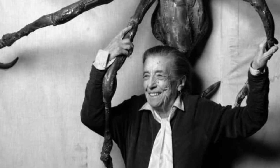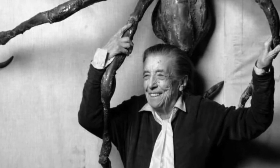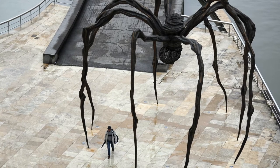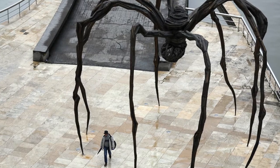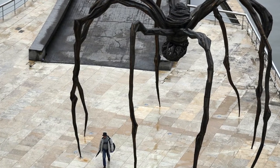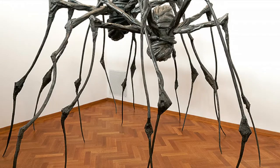Today we are going to continue to learn about Louise Bourgeois. We are going to focus on her spider sculptures. Bourgeois began creating her iconic sculptures towards the end of her career. The sculptures vary in size, but many are quite large and made of bronze and steel.